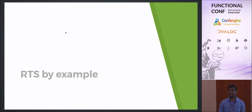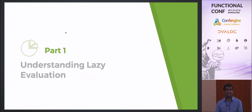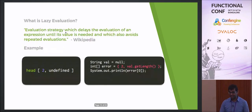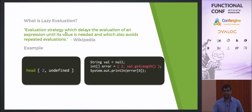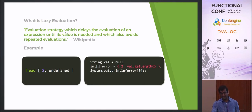Now I'll discuss the runtime system by showing a very trivial Haskell program. Before that, I want to explain lazy evaluation. According to Wikipedia, it's an evaluation strategy which delays the evaluation of an expression until its value is needed, and which also avoids repeated evaluations. That second part — avoiding repeated evaluations — is probably one of the trickiest parts of implementing laziness on the JVM.